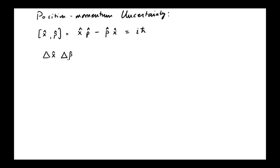So, it turns out that what you can show is that this is at least the absolute value of the commutator divided by 2, meaning it's at least h-bar over 2.